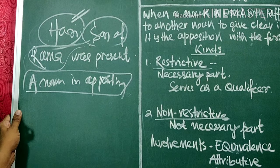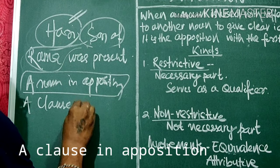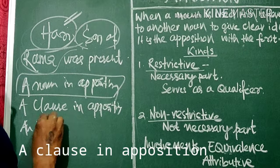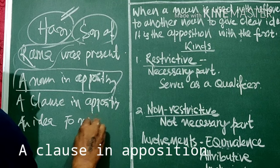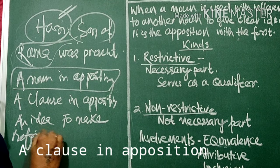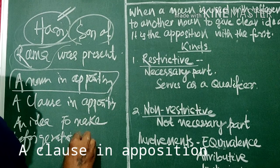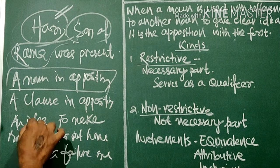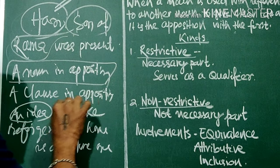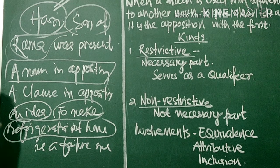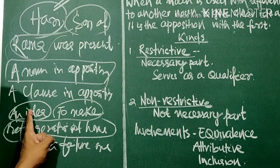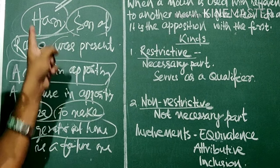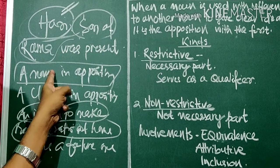Sometimes a clause is in Apposition. For example, consider 'an idea — to make a refrigerator at home.' Here 'an idea' is the first Apposition and 'to make a refrigerator at home' is a clause serving as the second Apposition. So Apposition can be used as both a noun and a clause.